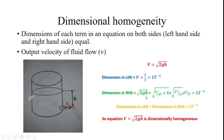G is the acceleration due to gravity, represented as meters per second squared. Meter is for length and second is for time, giving dimension L by T squared. H is the pressure head, which can be expressed with length L.